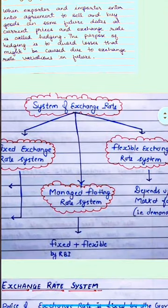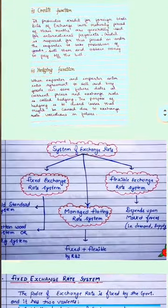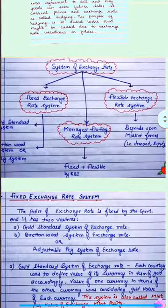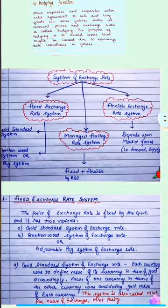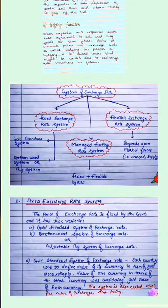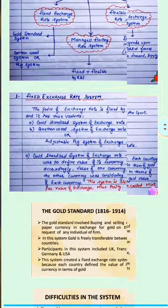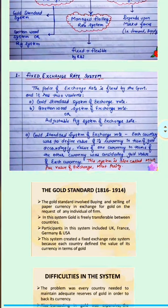These were the three functions. Now coming on to types of exchange rate. We have three systems: number one is the fixed exchange rate system; number two is the flexible exchange rate system; and number three is the managed floating rate system. The fixed exchange rate system has two types: the gold standard system and the Bretton Woods adjustable peg system.